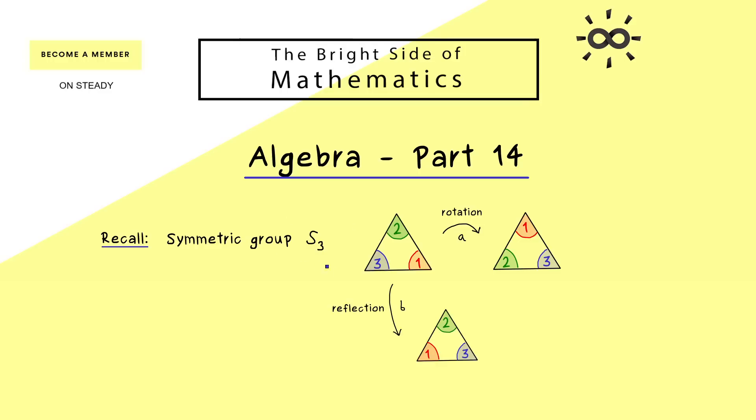However, we only need 2 elements to generate the whole group. For example we can fix one rotation operation A and one reflection operation B and then we get all the elements back with the combinations of A and B. So we would write that S3 is generated by A and B.